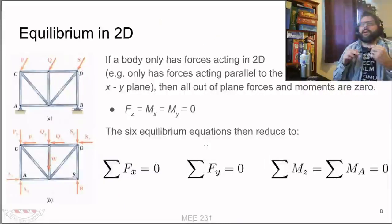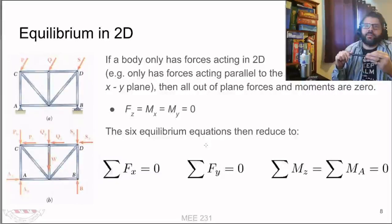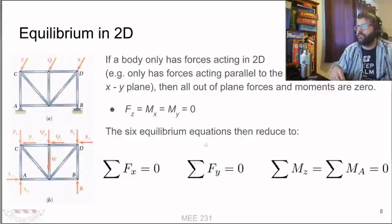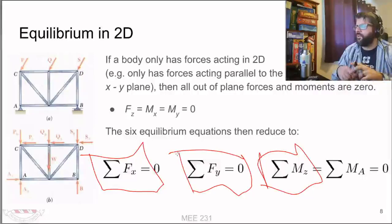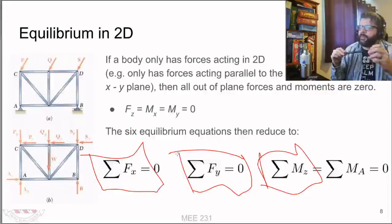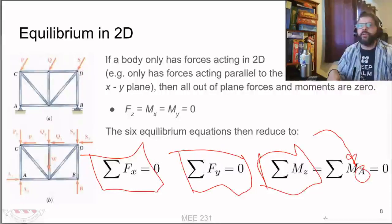If your forces are acting in 2D - none acting in the z-plane, no moments about the x or y-axis - then you can simplify down to just taking the moment about the z-axis, plus the sum of forces in x and the sum of forces in y. So we start with six equilibrium equations and reduce it down to just three. The moment about the z-axis can be taken at any point - about A, about B, about C, or some arbitrary point in space.